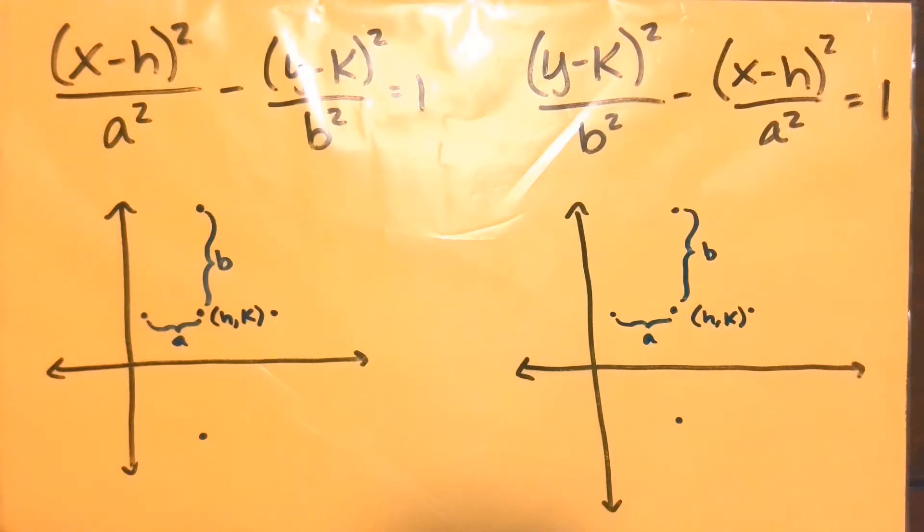So in talking about the general forms of the hyperbola, we want to consider both cases: the case where our x term is first and then the case where the y term is first, or you can think of it as the case where y is negative, the case where x is negative.